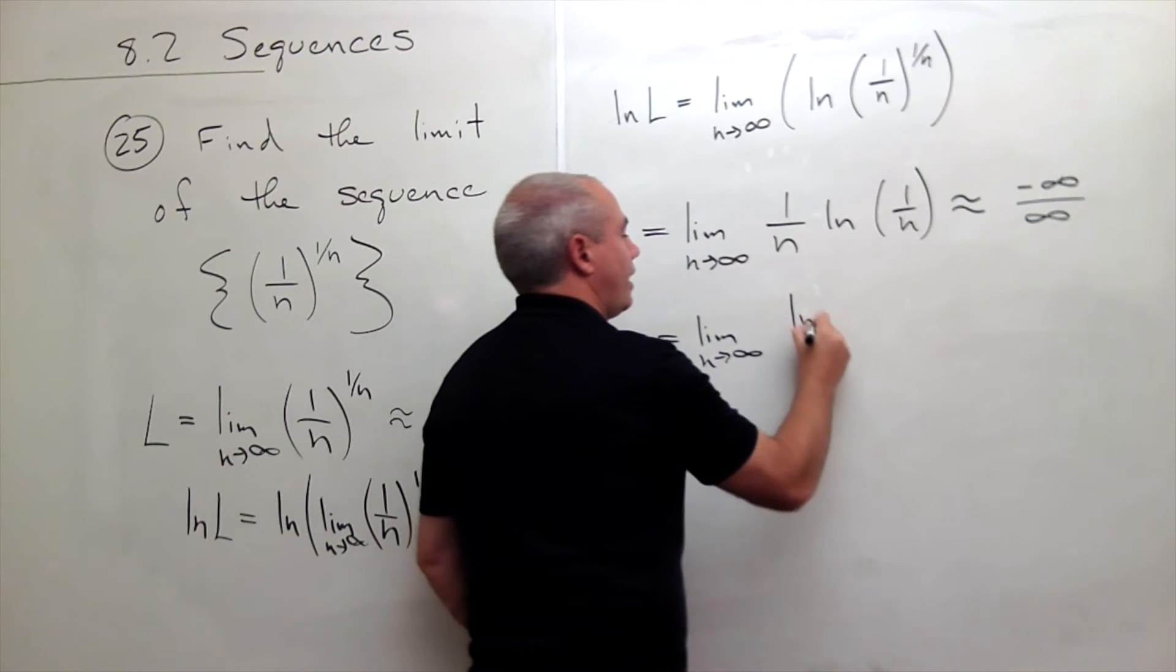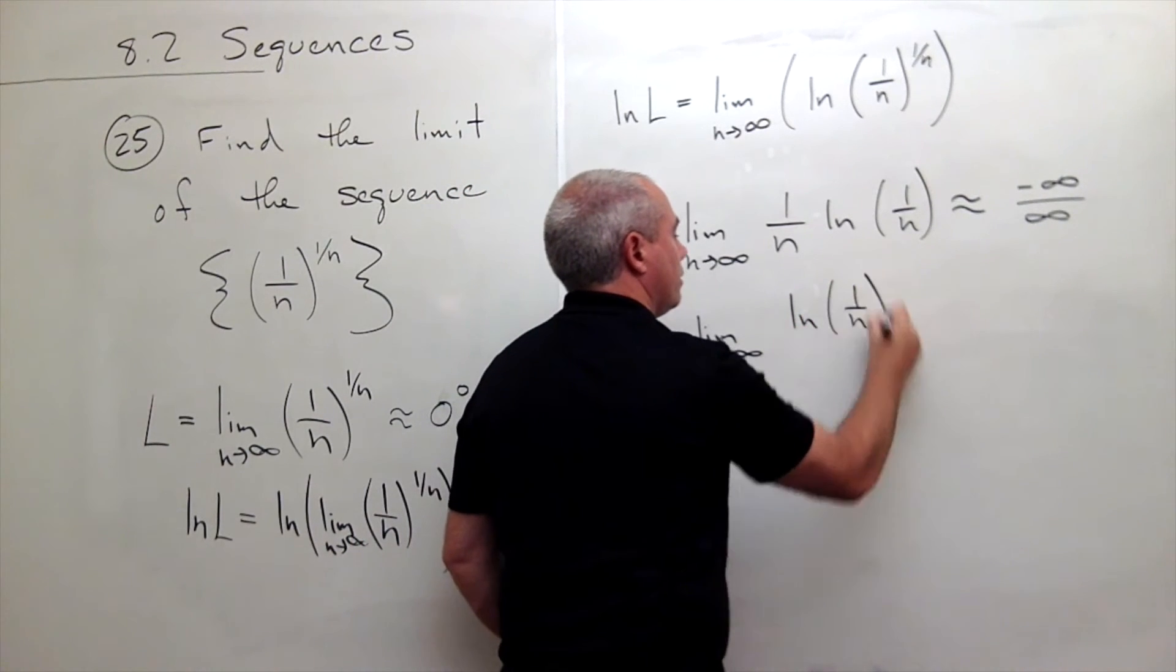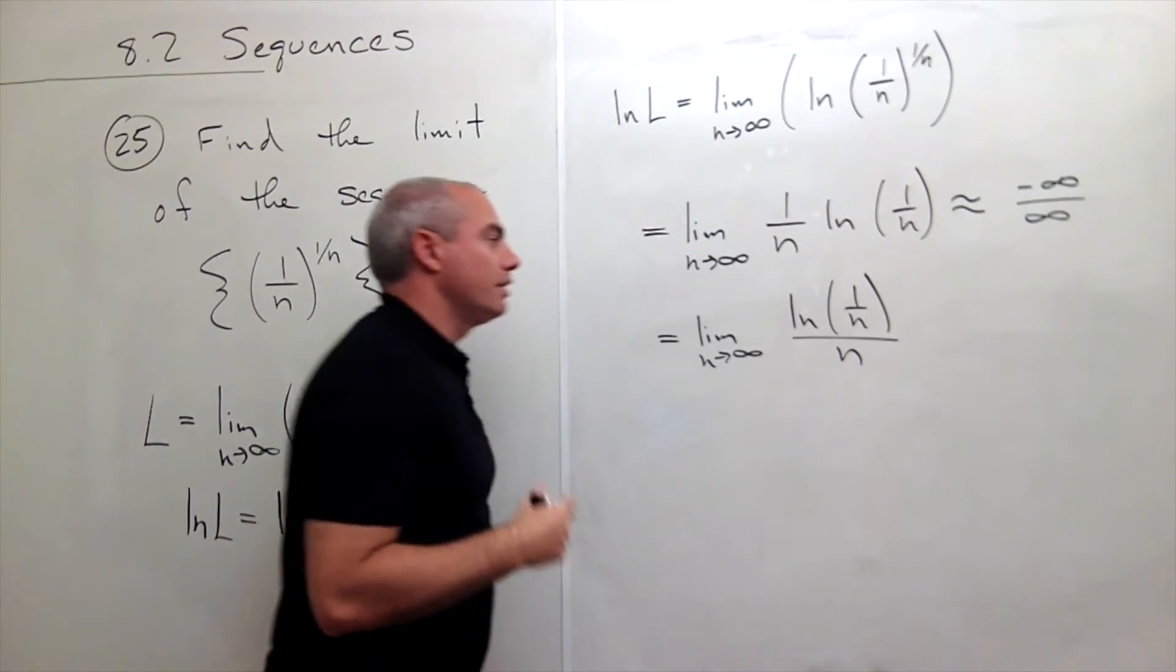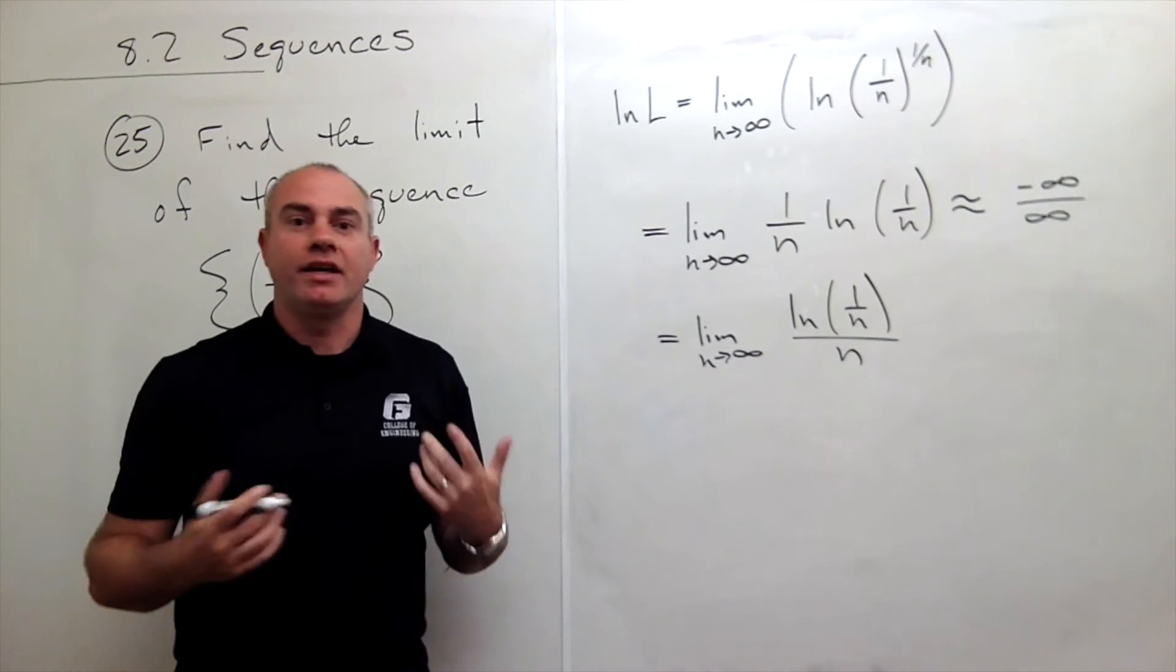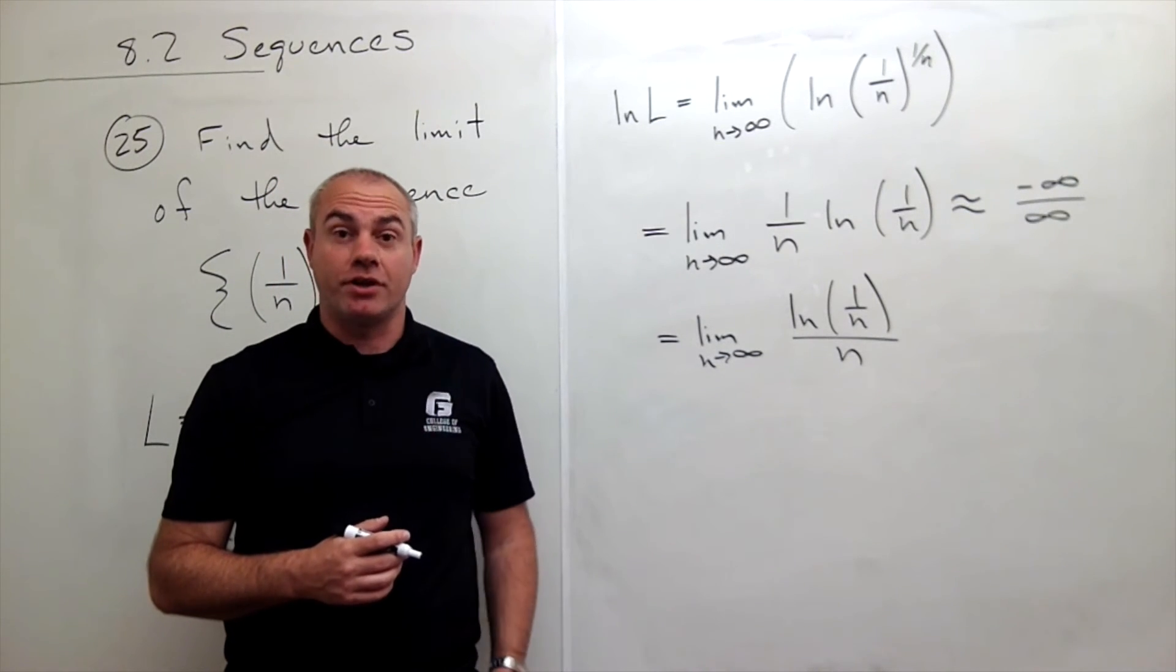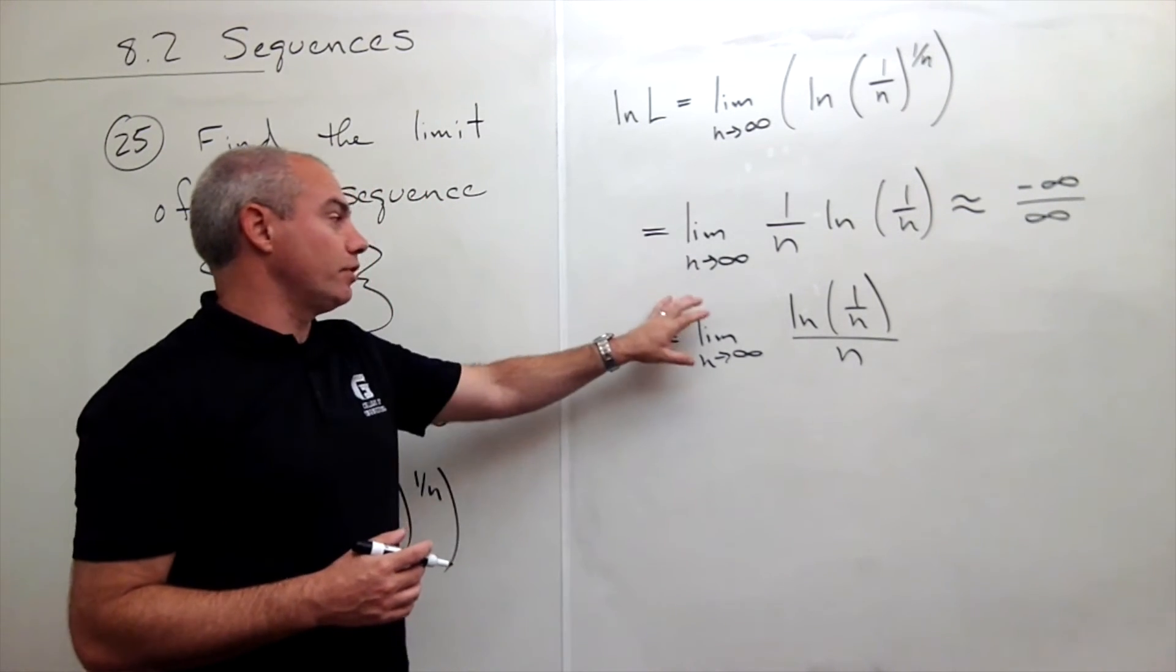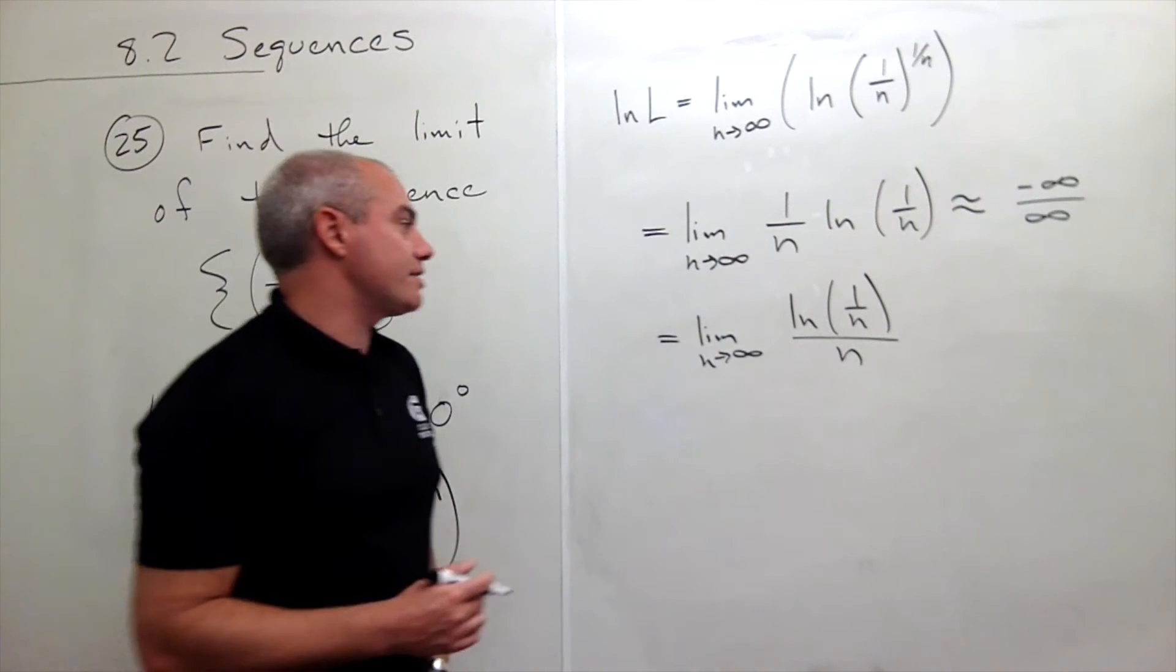I just write ln of 1 over n divided by n. Now we see that's very clearly negative infinity divided by infinity. It's a perfect form for L'Hopital's rule. So let's use L'Hopital's rule to find this limit.